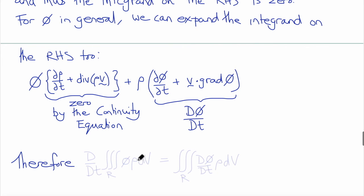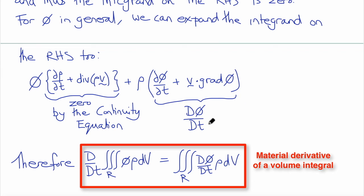Putting all this together, we can write that the material time derivative, big D dt, of the volume integral over R of phi times rho dV, is equal to the triple integral of rho times dφ dt, with respect to volume. So this is the substitution that I was using.